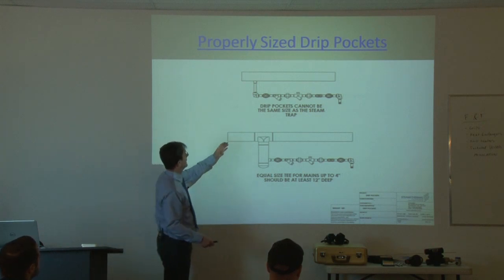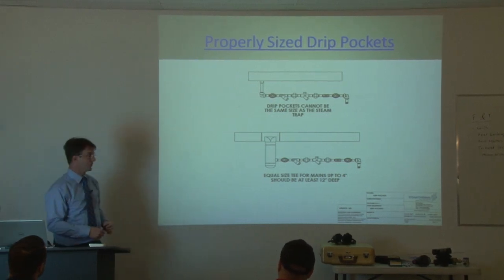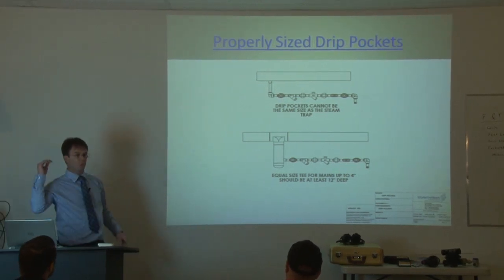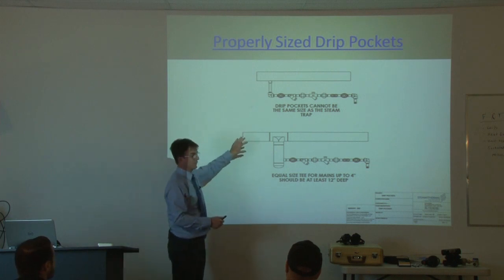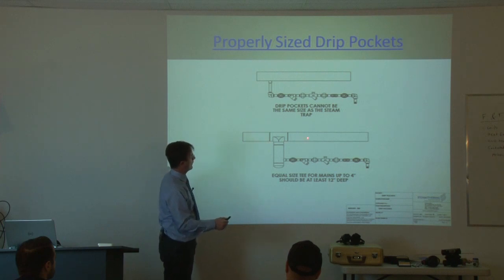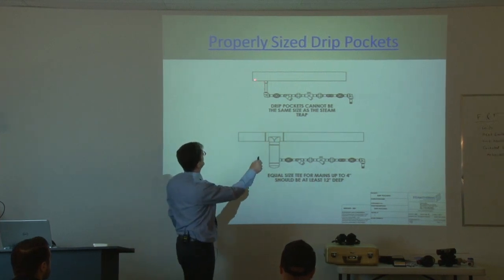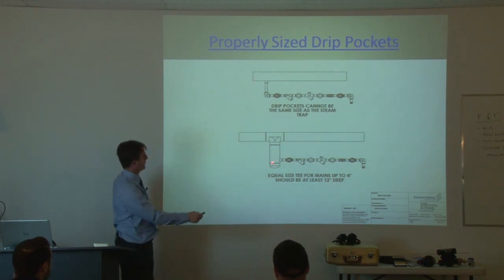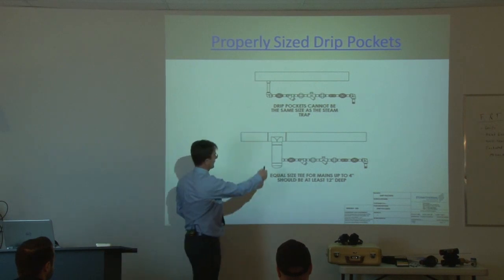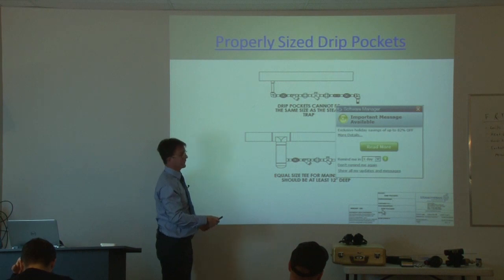The problem with this is that steam travels at 100 to 130 kilometers an hour. So it's really traveling fast down the pipe. Most pipe sizes are sized for very high velocity. So if you have condensate in the pipe, it's also traveling that speed. And if your opening is only that small, most of the condensate is just going to fly right by. So you have to have enough opening. It's got to be wide enough and deep enough to accept the condensate or receive the condensate.